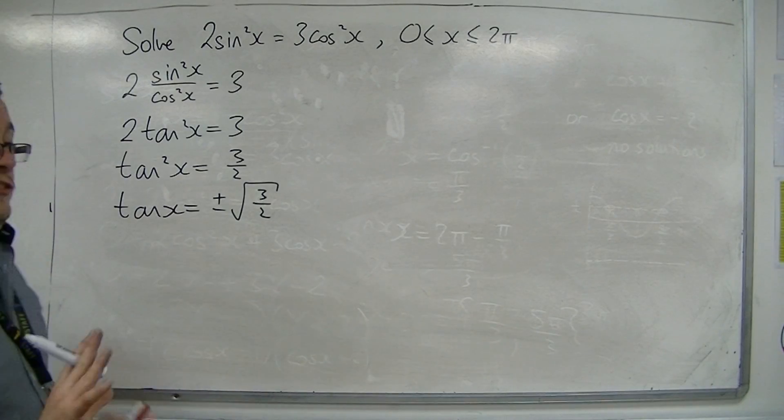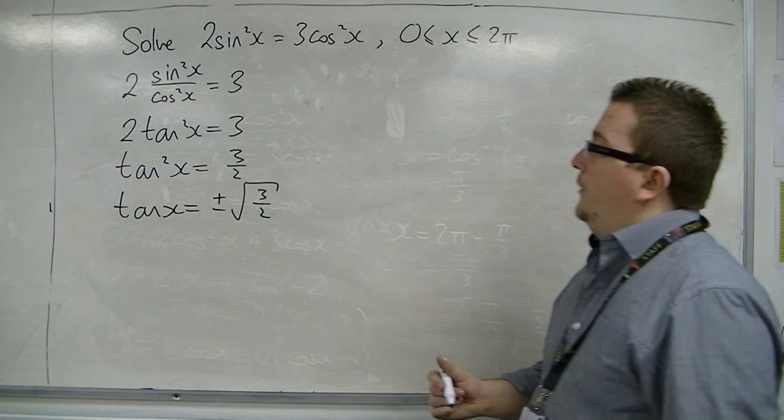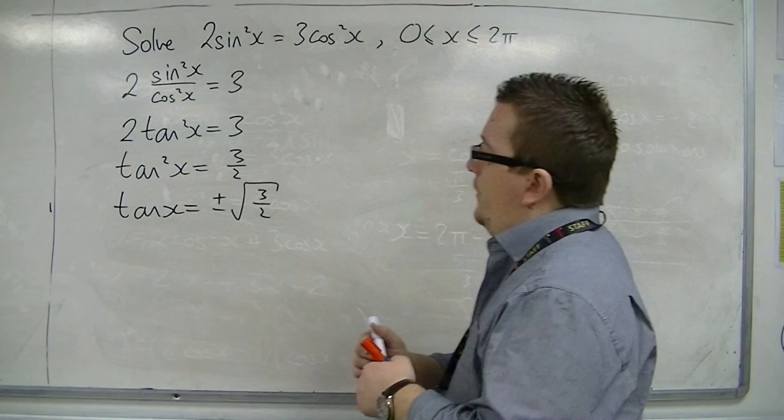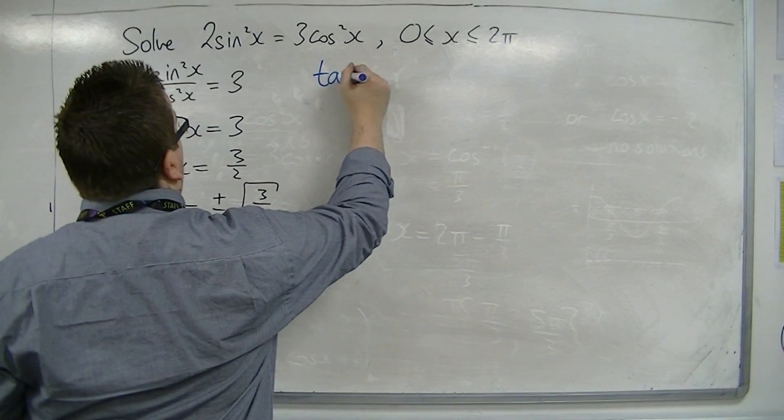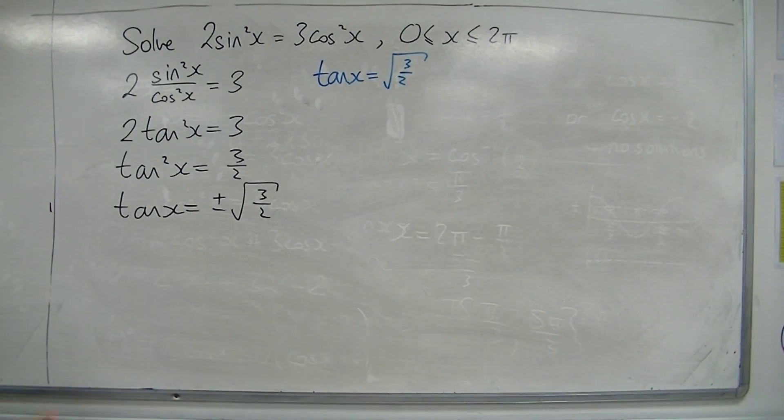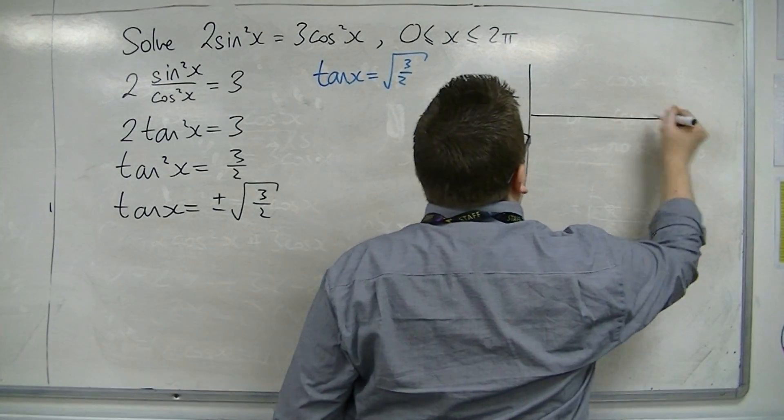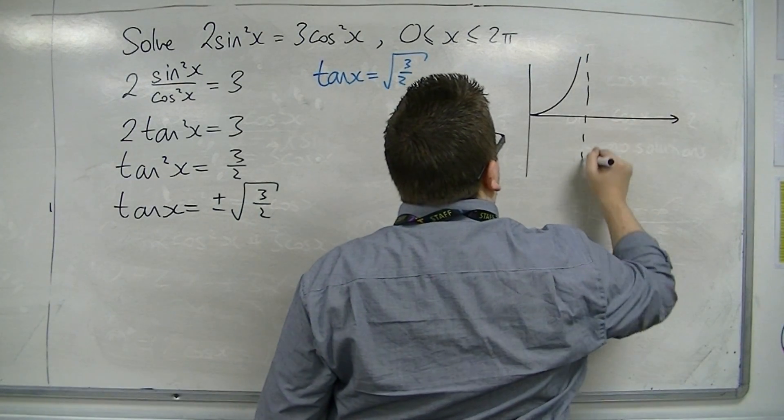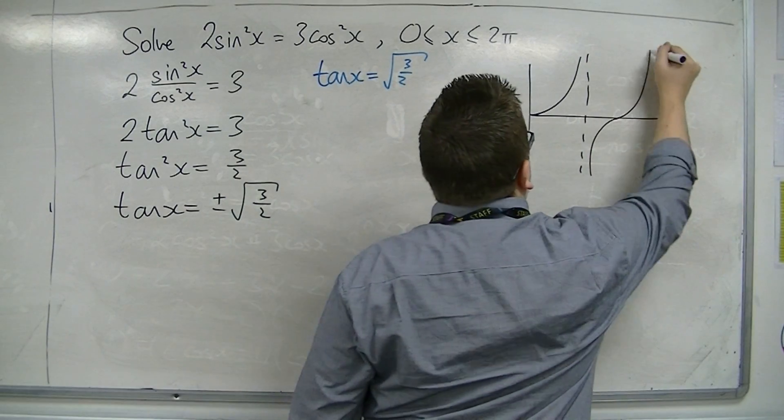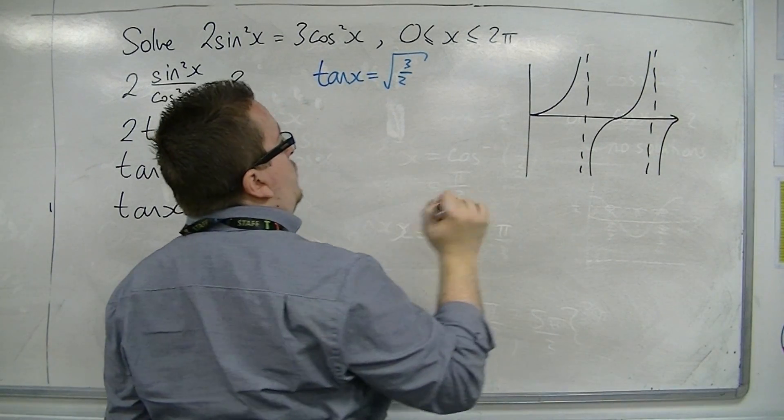We actually have two separate equations here to solve. First of all, let's look at tan x equals positive root 3 over 2. Let's draw tan. Here's tan between 0 and 2 pi.